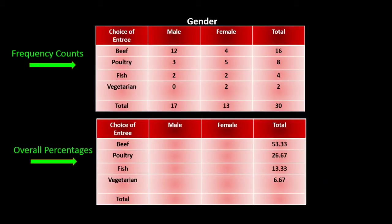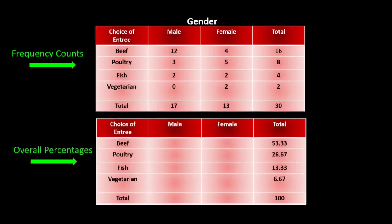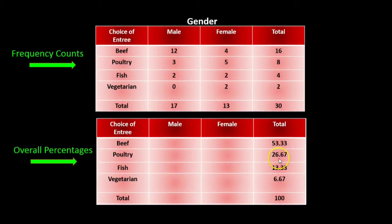All of these row percentages should add up to 100 percent. If we add up 53.33 plus 26.67 plus 13.33 plus 6.67, it would add up to 100 percent. If it doesn't add up exactly to 100 percent, it's a rounding error. I kept things to two decimal places and it does add up to 100 percent.